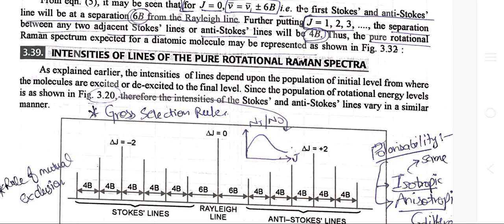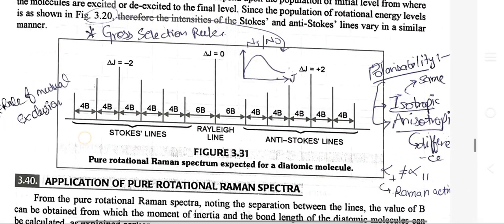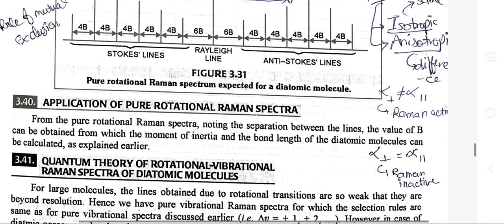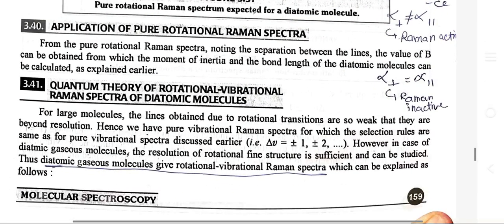Intensities of lines of the pure rotational Raman spectra: the intensities of lines depend upon the population of the initial level from which the molecules are excited or de-excited to the final level, since the population of rotational energy levels varies accordingly. Thus the intensities of the Stokes and anti-Stokes lines vary in a similar manner. Application: from the pure rotational Raman spectra, noting the separation between the lines, the value of B can be obtained, from which the moment of inertia and the bond length of the diatomic molecule can be calculated.